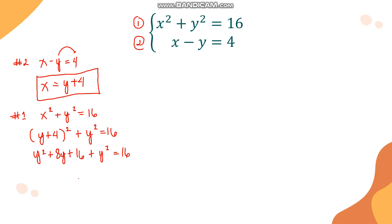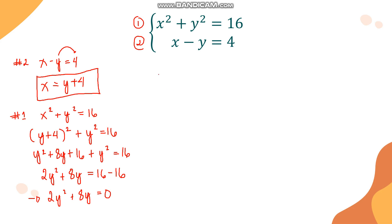Combining like terms, y squared and y squared give 2y squared, plus 8y, and moving 16 to the other side gives 2y squared plus 8y equals 0. Both terms share a common factor of 2y, so we apply common monomial factoring: extracting 2y from 2y squared leaves y, and extracting 2y from 8y leaves 4.